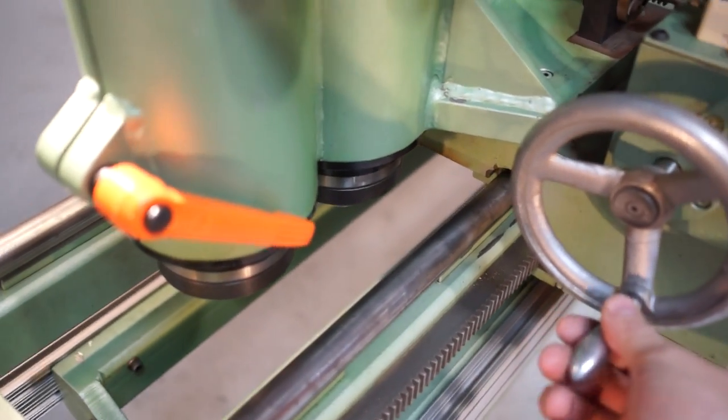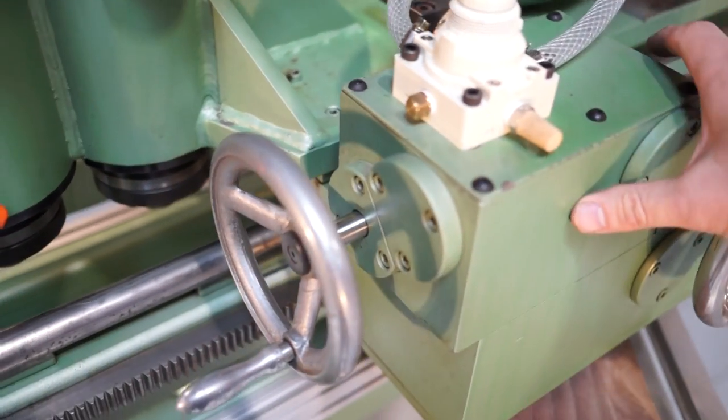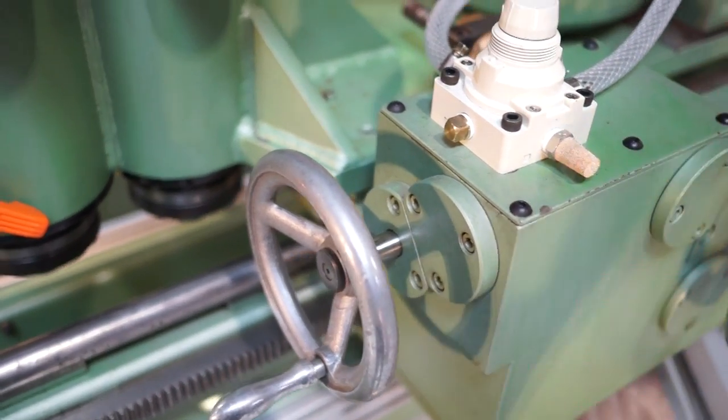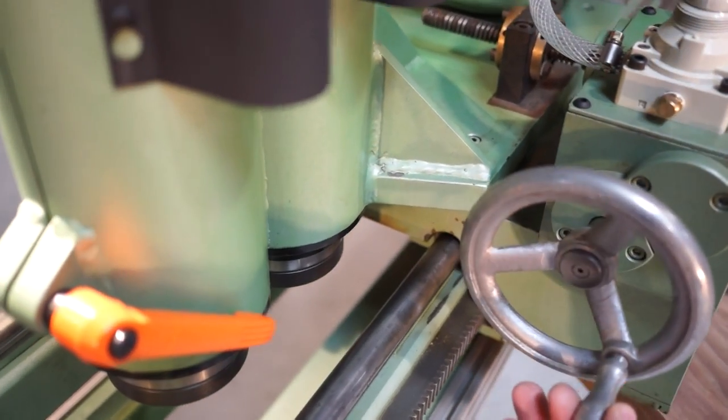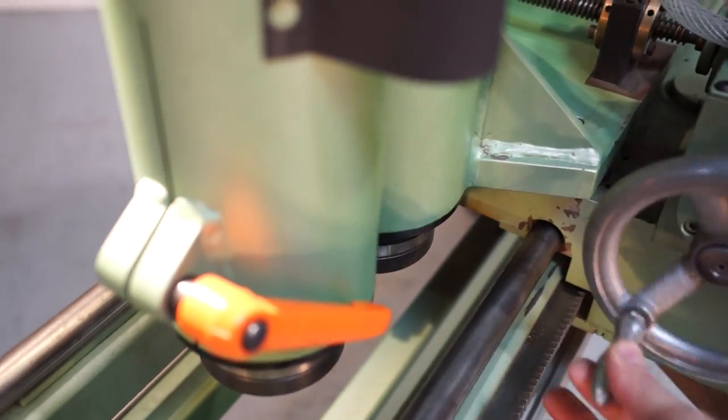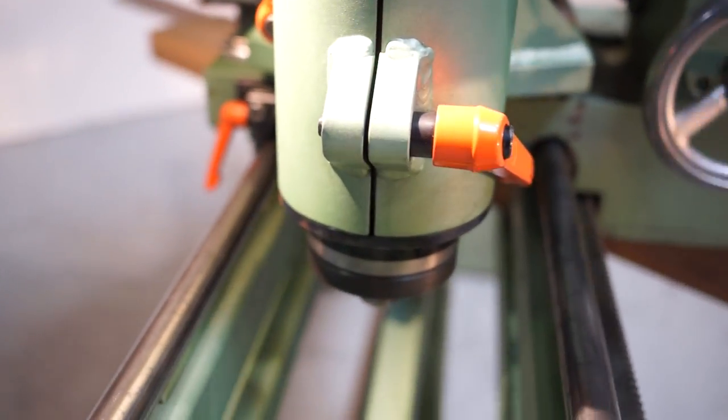You also have this hand wheel here which controls another precision gearbox. These are really well-built gearboxes. This machine is ultra smooth. As you can see I can use just two fingers and move it. This is your Y positioning and you can offset that.